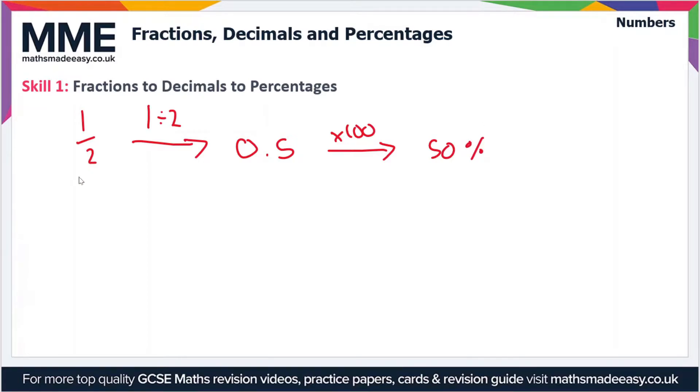Let's have a look at another example. What if we have a fifth? Again we treat the line in the fraction as a divide symbol, so we're doing 1 divided by 5 which gives us 0.2, and then we times by 100 if we want to get this decimal as a percentage and that gives us 20 percent.